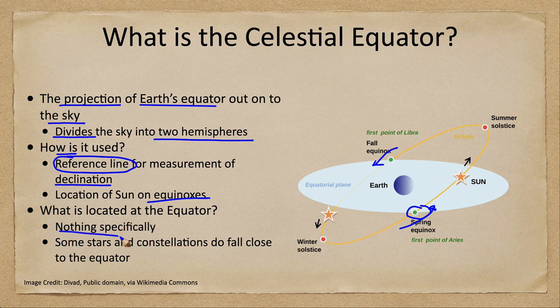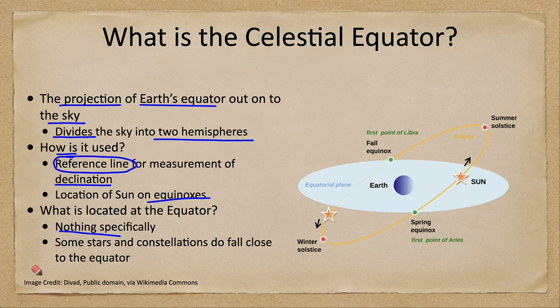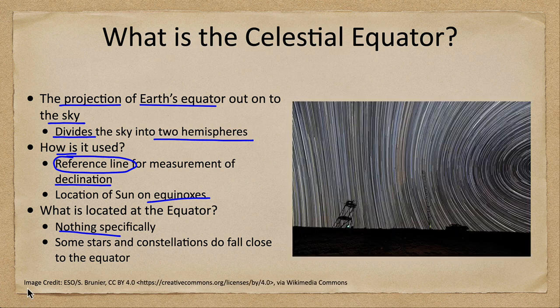As with the celestial poles, there is really nothing specifically located at the equator. There certainly are stars and constellations which happen to pass through the equator, but not necessarily anything directly on it. Here we're looking at an image — as we looked at for the celestial poles — and we can see one of the celestial poles off to the right-hand side. In this case, we're viewing the celestial equator in the image.